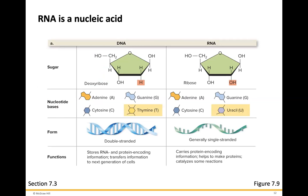RNA is a nucleic acid as well. The differences between RNA and DNA involve the sugar. Instead of deoxyribose, found in DNA, the sugar in RNA is ribose. The difference is at one carbon position: deoxyribose has a hydrogen there, while ribose has a hydroxyl group. The nucleotide bases are also different. RNA still has adenine, cytosine, and guanine, but instead of thymine, it has uracil.